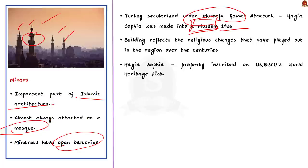Hagia Sophia is a beautiful monument reflecting the confluence of Christian and Islamic traditions. It is part of the Historic Areas of Istanbul — which is the capital of Turkey — included in the UNESCO World Heritage List. Therefore, Hagia Sophia is part of the World Heritage List and must be protected. In this discussion, we covered its initial role as a church, its role as a mosque, its role as a museum, and the ongoing church versus mosque debate.